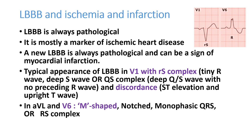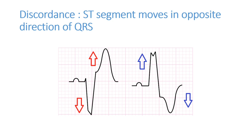Sometimes you can see a W pattern in LBBB, where QRS is negative — in that case ST will be upright. Whatever the direction of the QRS complex, mostly it is the M pattern, so the ST segment and T wave will be on the opposite side. This is called discordance. In V1, QRS is negative so ST is positive; in V5 and V6, QRS is positive so ST is negative. Sometimes you can see negative QRS with positive ST.